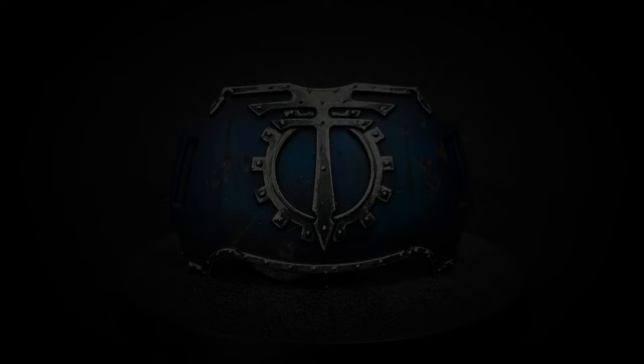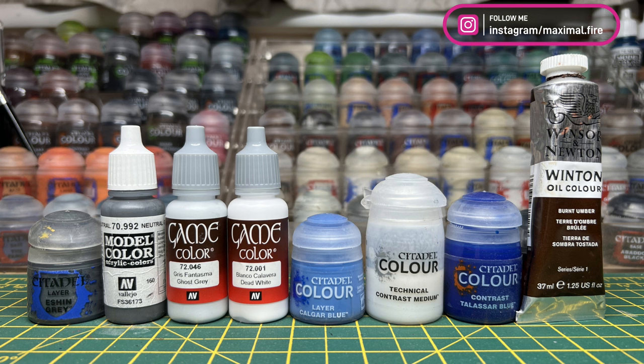Starting off with the paints we've got Eschen Grey, Neutral Grey, Ghost Grey, Dead White, Calgar Blue, Contrast Medium Talisar Blue and some Burnt Umber oil paint. All of them available from either Citadel or Vallejo and the Winsor & Newton oil paint.